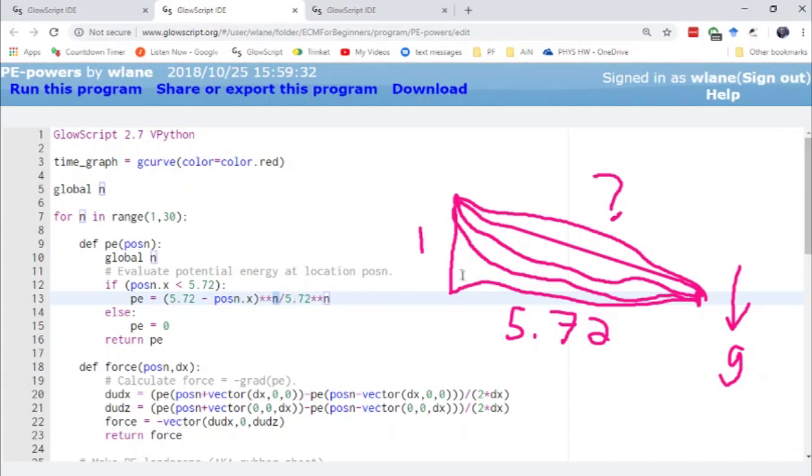We're raising that to the nth power. So that gives you the sharpness of the trajectory. And then to keep this scaled up to one, we're dividing by 5.72 to the n power because when your X coordinate equals zero, then you have 5.72 to the n power divided by 5.72 to the n power. So you're always going to start out at one up here.